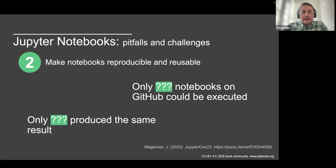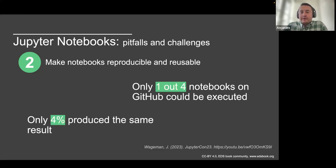Another pitfall is the effort and challenges to make notebooks reproducible and reusable. There are questions about how many notebooks on GitHub could actually be executed and produce the same results. These numbers show that almost 25% of notebooks could be executed, meaning only a quarter can be run at all, and only 4% produce the same results. This is based on scientific findings from studies you can find referenced in this recording.